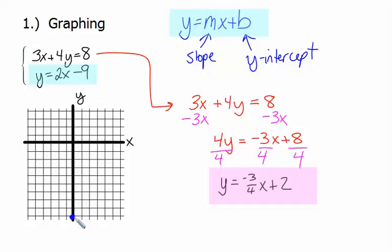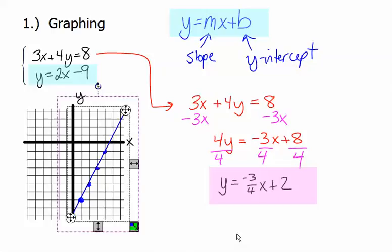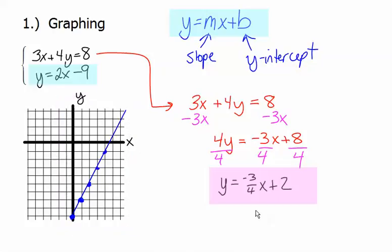And then the slope is 2, which means we go up 2, right 1, up 2, right 1, up 2, right 1, effectively on the screen. So I'm going to color that line in blue. And that's our first of the two lines.